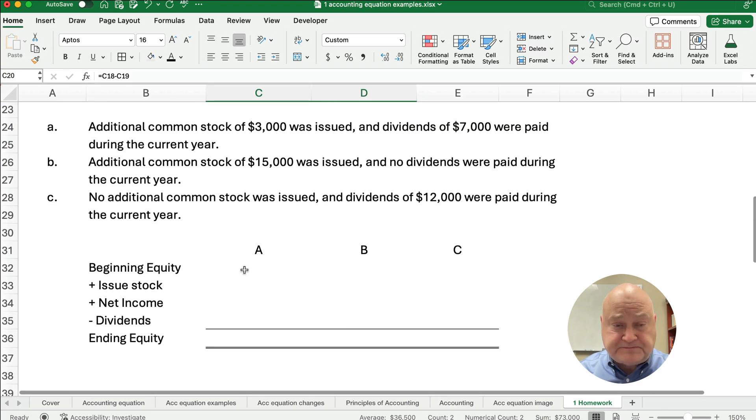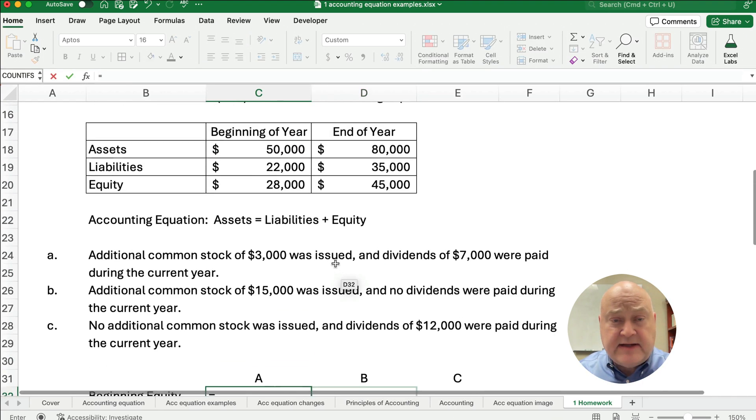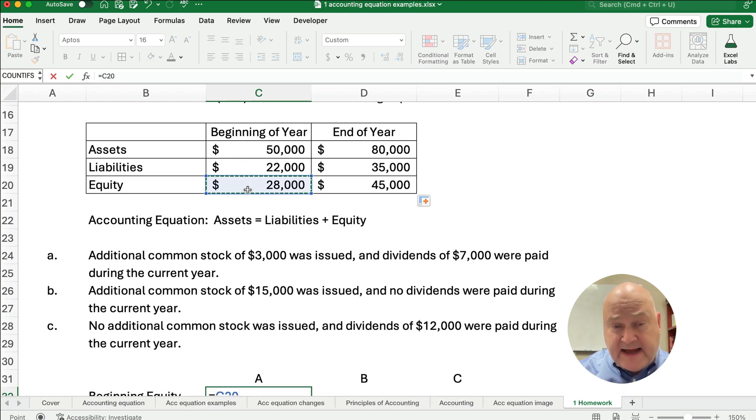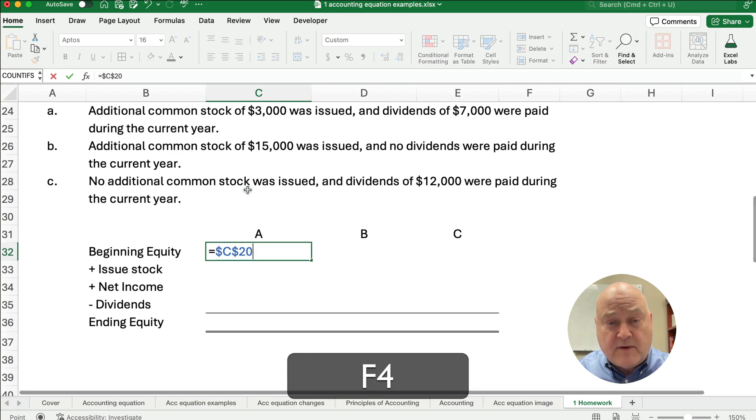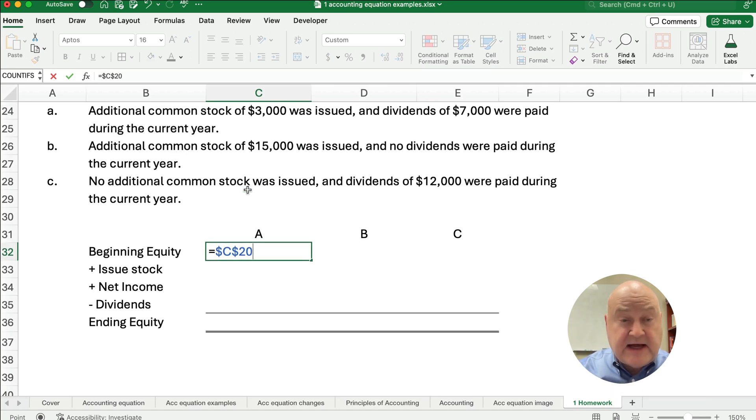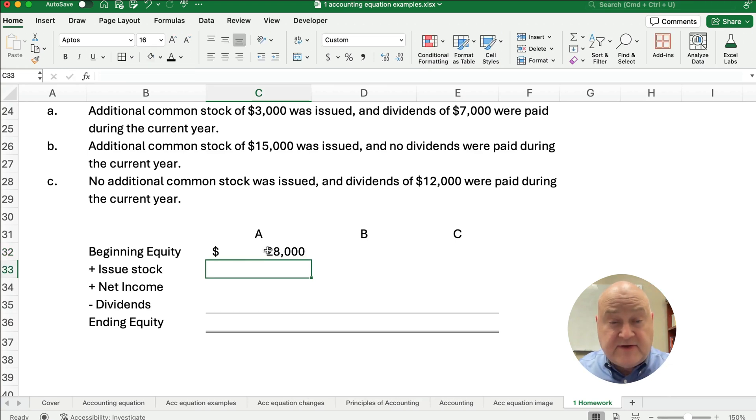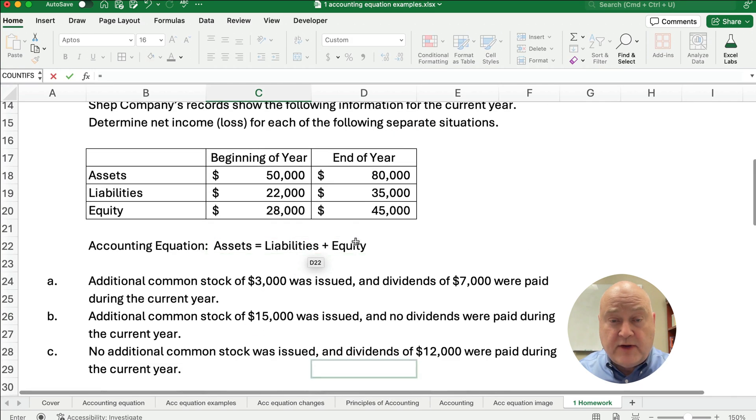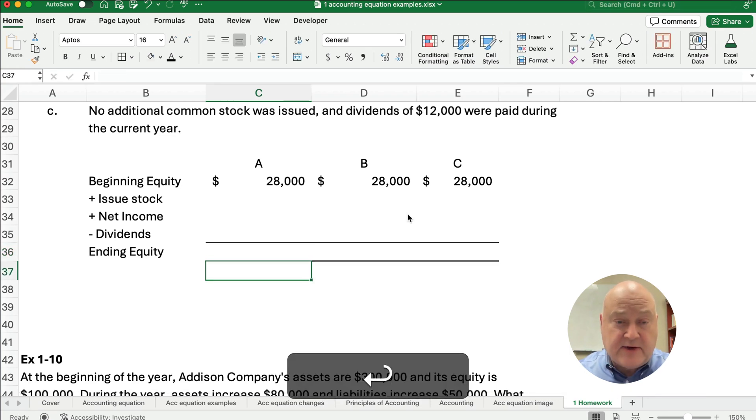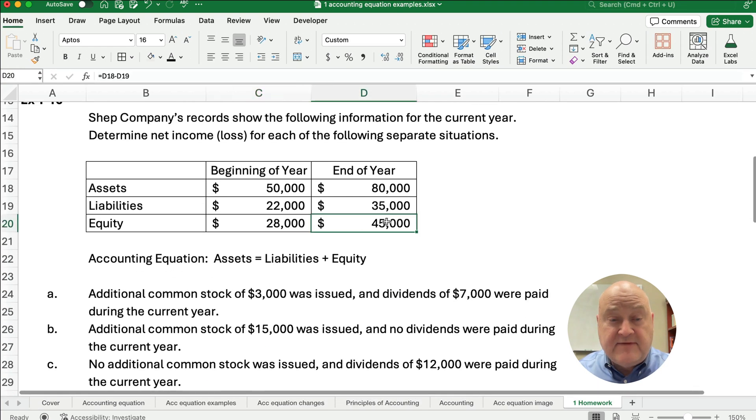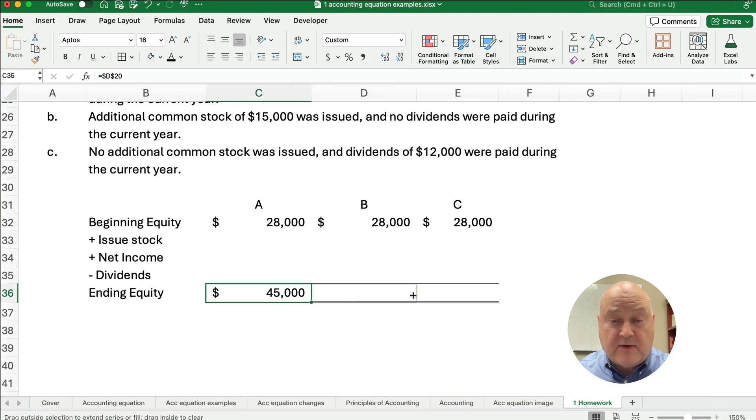So down here in this problem we're going to say our beginning equity is going to be 28,000 and we're going to make it absolute because I want to copy that across from A, B, and C. So I'm going to do the F4. So it makes it dollar sign C dollar sign 20. That's anchoring it. That's called an absolute address because it's going to be beginning equity of 28,000 in all three scenarios. We're going to do the same thing for ending equity. We're going to point to the 45,000. I'm going to make that F4 to make it anchor at the 45,000 here and we're going to copy it all the way across.